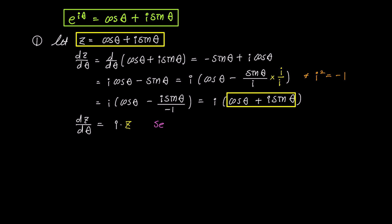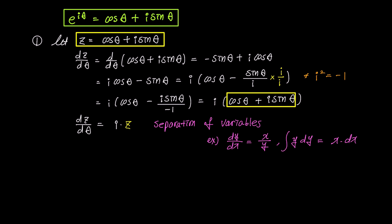This expression represents a differential equation, and we can solve it with separation of variables. To illustrate, consider a differential equation like dy over dx equals x over y. If we rearrange it to have y terms on the left and x terms on the right, we get y dy equals x dx. Integrating both sides gives the integral of y dy equaling the integral of x dx, making it separable. The solution after integration is y squared over 2 equals x squared over 2 plus c, expressing y in terms of x.